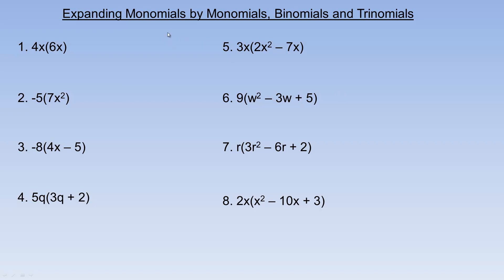In this tutorial we're going to take a look at some examples of multiplying a monomial by another monomial, or a monomial by a binomial, and the last three are monomials times trinomials. So the first two are two monomials multiplied together — 4x and 6x — they're both monomials.